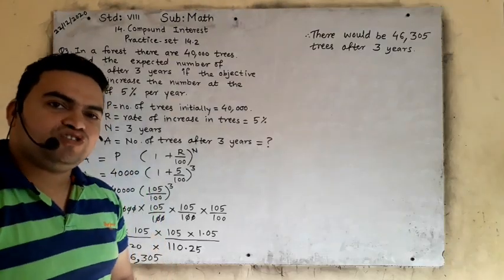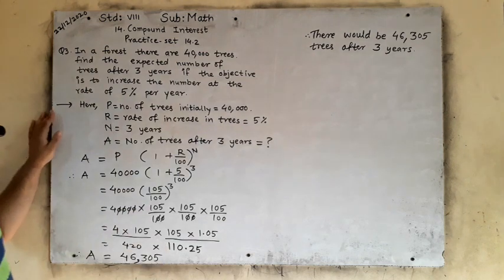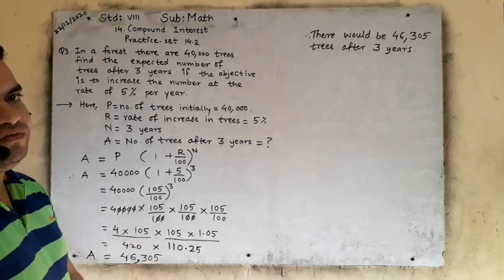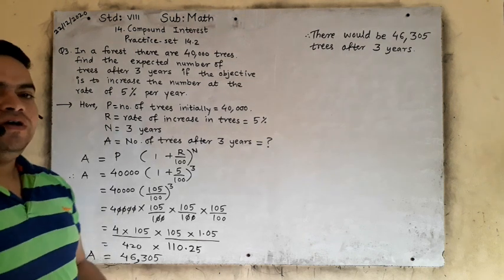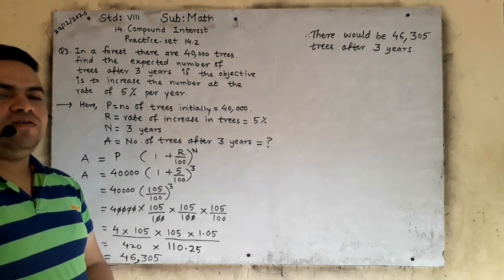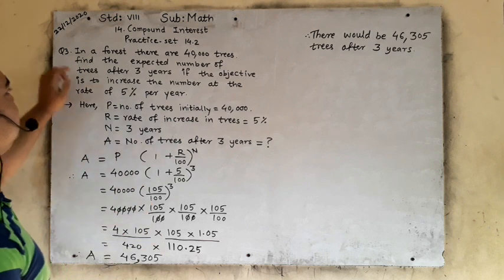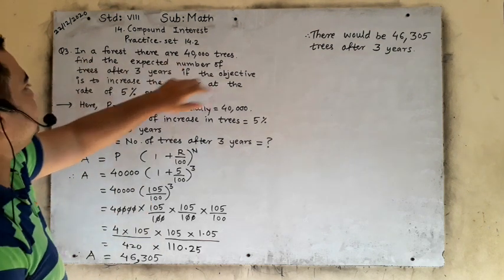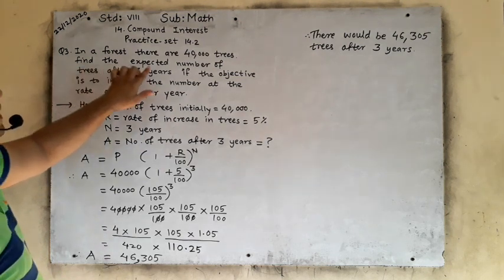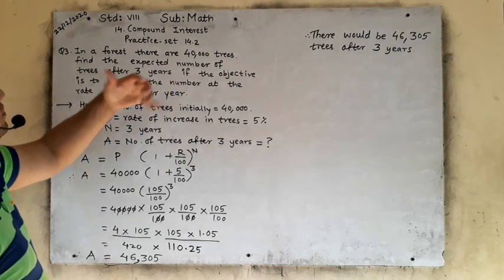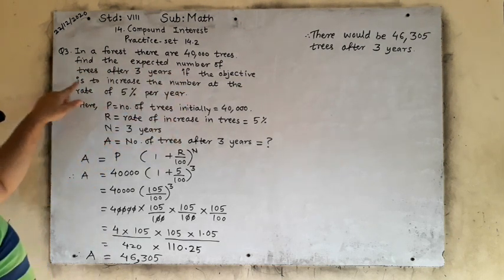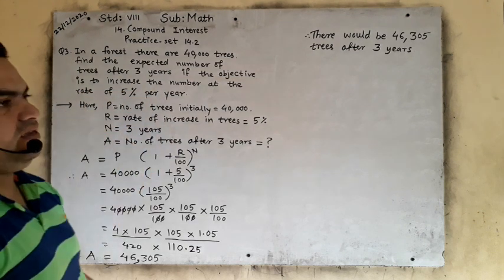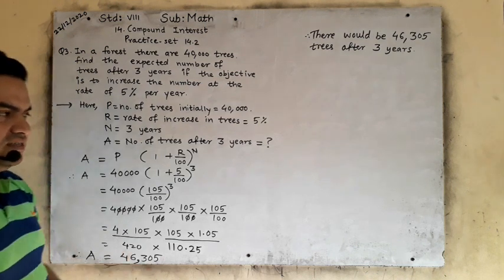I hope you understood how to solve this. Now after question number 2, we will see question number 3. All formulas are the same, the method is the same. Question number 3: In a forest there are 40,000 trees. Find the expected number of trees after 3 years, if the objective is to increase the number at the rate of 5% per year. It is very easy.